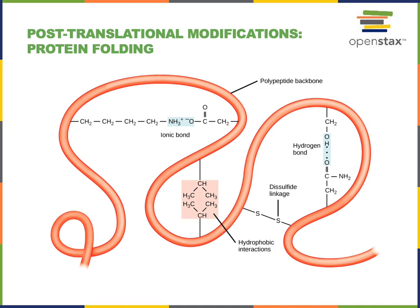Following translation, post-translational modifications include protein folding, where interactions between neighboring amino acids cause the polypeptide to fold into its secondary structure. Hydrogen bonding between adjacent polar amino acid side chains stabilizes secondary structure formation into alpha helices and beta pleated sheets. Hydrophobic interactions of nonpolar amino acid side chains push these residues deep within the polypeptide structure, moving them away from the surrounding aqueous environment.